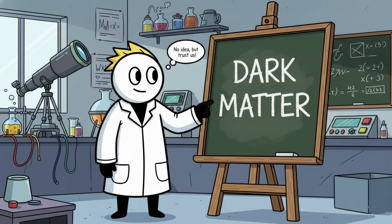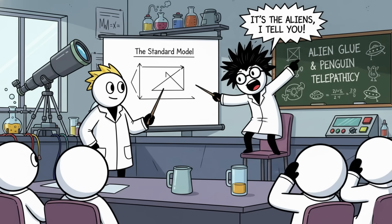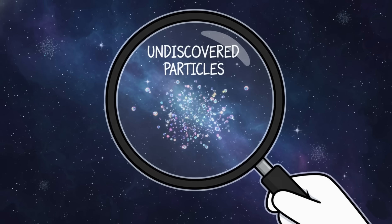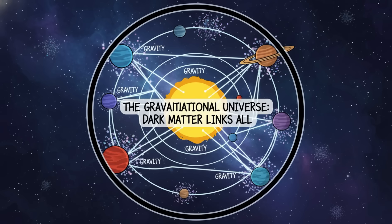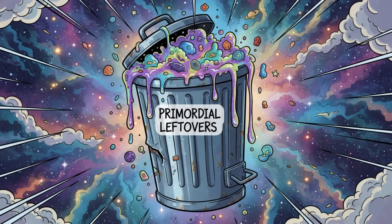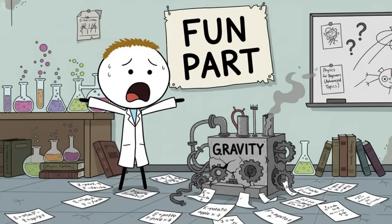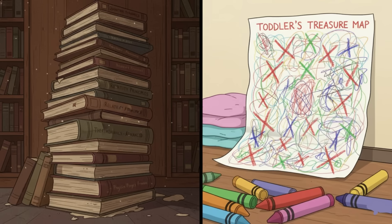Theories range from sensible to okay, slow down there buddy. Maybe dark matter is made of undiscovered particles. Maybe it interacts only through gravity. Maybe it's made of weird primordial leftovers from the early universe. Or maybe, and this is the fun part, gravity itself is broken and we've been using the wrong equations since the beginning, which would mean every physics textbook is as accurate as a toddler's treasure map.